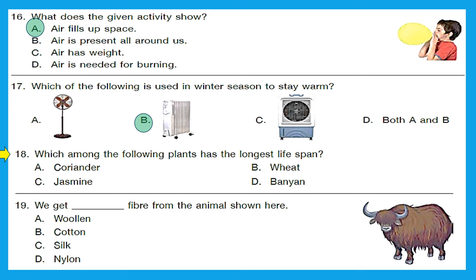Question 18: which among the following plants has the longest lifespan — coriander, wheat, jasmine, or banyan? Generally, trees are the ones with the longest lifespan; they are big, tall, and strong plants that live for many years. Out of these four, option D, banyan, is a tree and hence will have the longest lifespan.